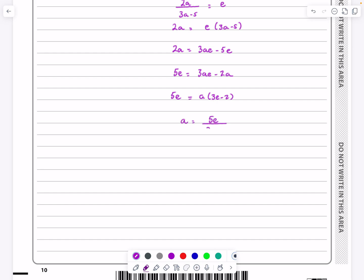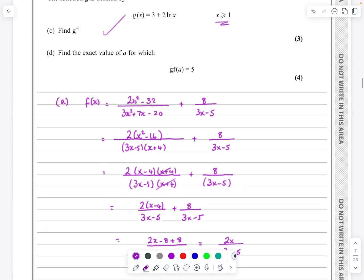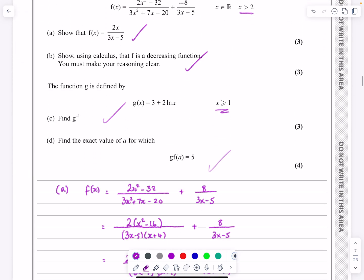And then finally drop the 3e minus 2 down, 5e over 3e minus 2. And then that's the actual answer. That's an exact value, isn't it? So the value of a that makes that true is what we just found there.